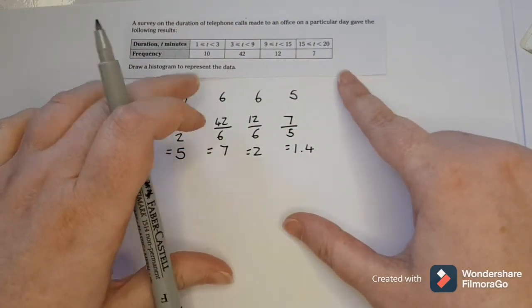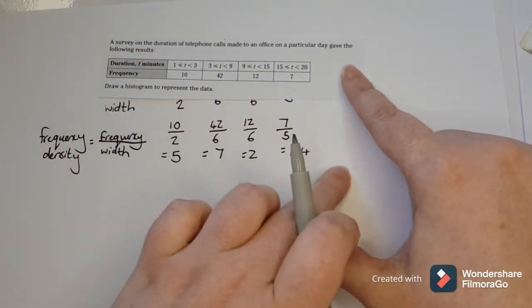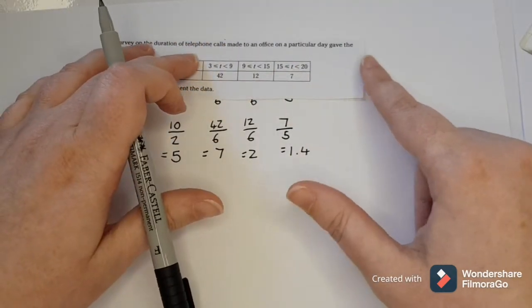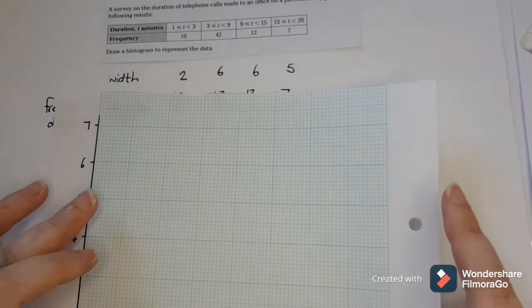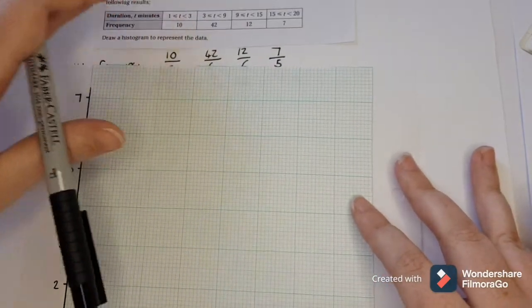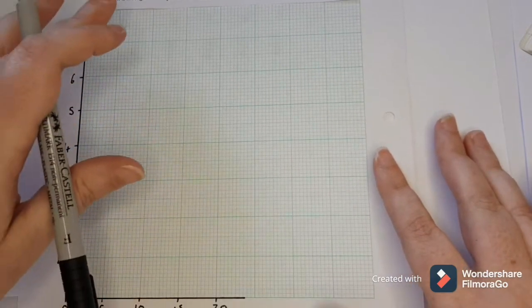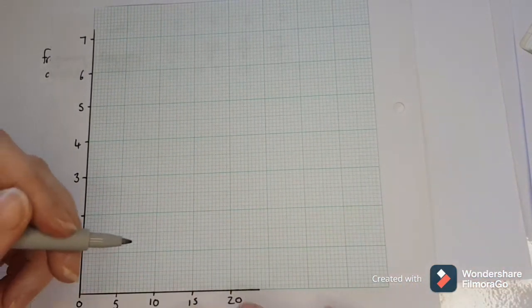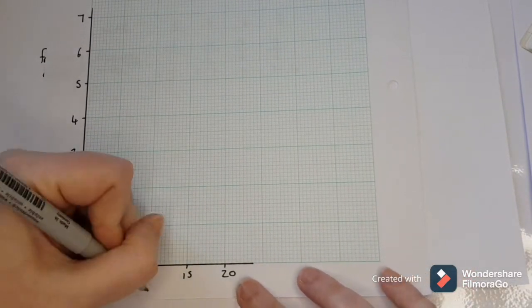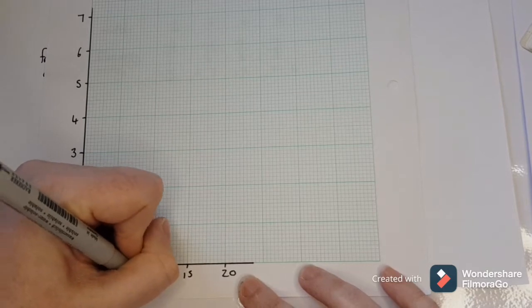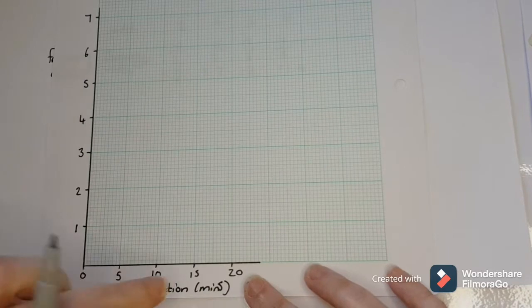Now I've got all my classes and my frequency densities, so I can plot the histogram. On my graph paper, I'm going to mark all my different points on the x-axis. I label what I'm measuring — here it's duration in minutes. Always don't forget the units.